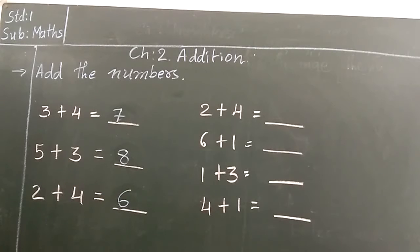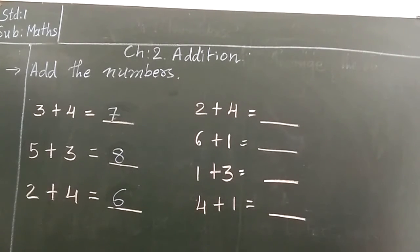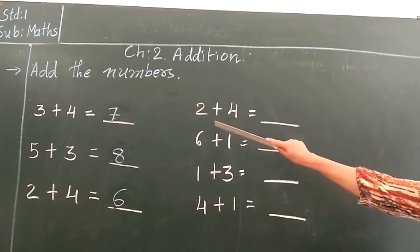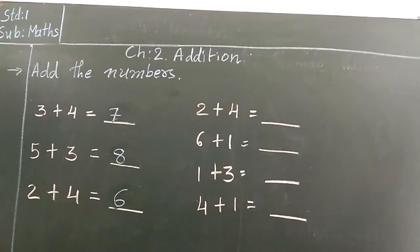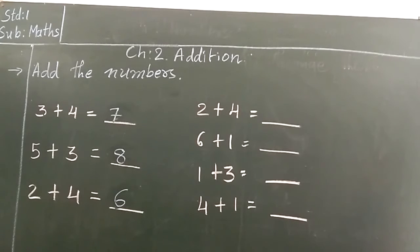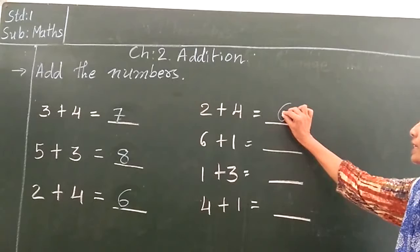Now we will see another example. Now students, see here. 2 plus 4. Again 2 plus 4 is coming here. So we will do again. 2 plus 4 equal to 6. It is already done.